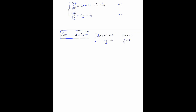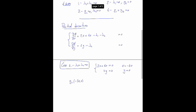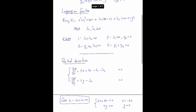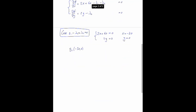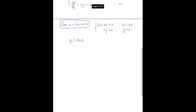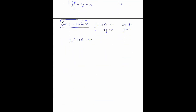But now let's check. g1 of (−30, 0) — remember g1 is 80 minus x and should be negative. So this is 80 minus (−30) which is 110. That's positive, so not a valid point.